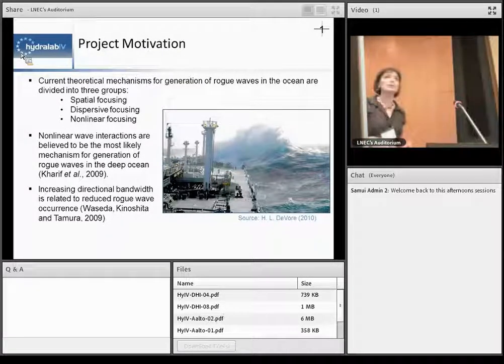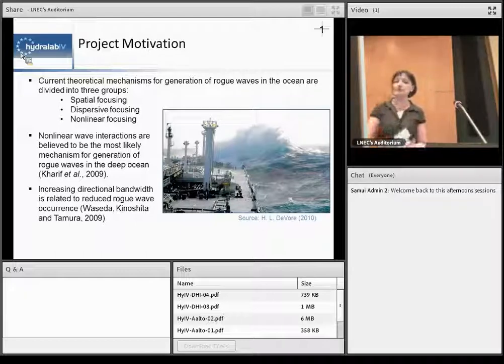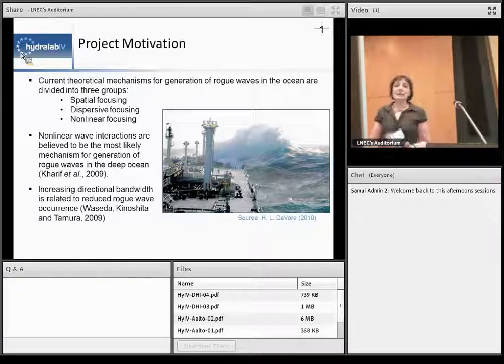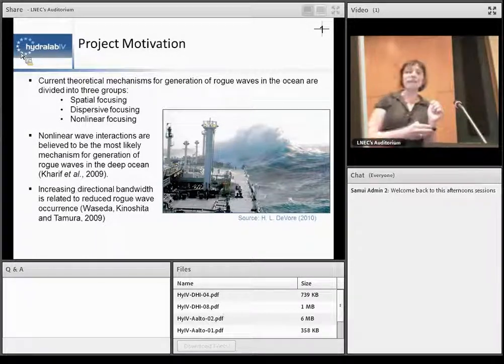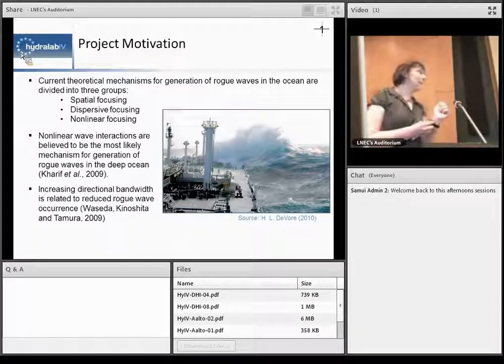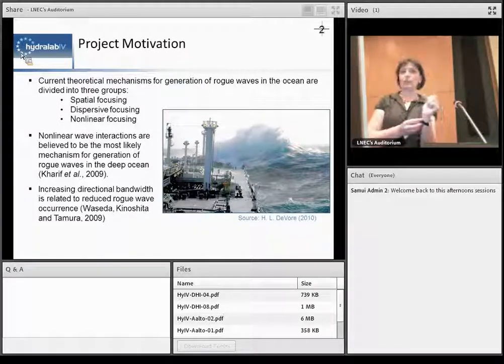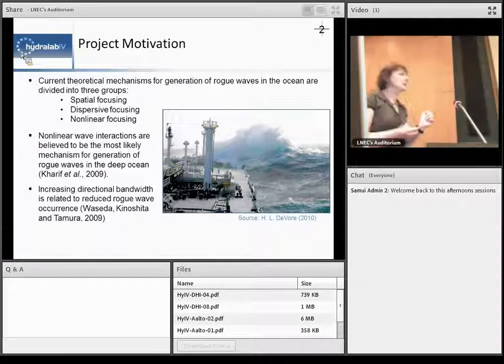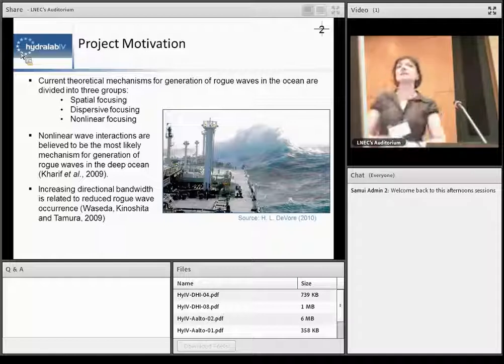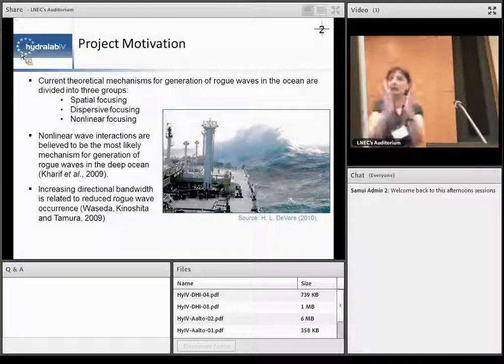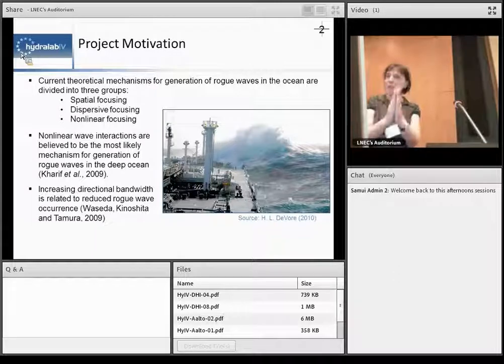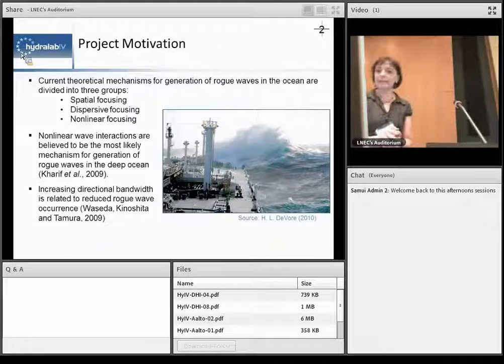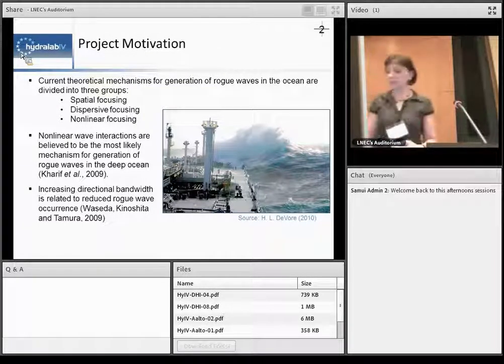So far I think most scientists think that nonlinear wave interactions are likely the causal mechanism for generation of those rogue waves in the ocean. And also in most cases that really happens when we have narrow banded sea states, meaning very narrow frequency band or directional spread.